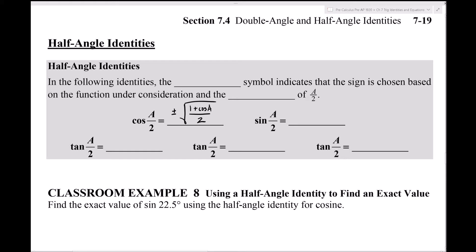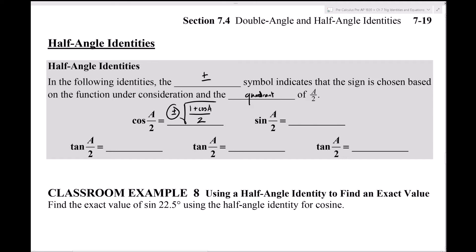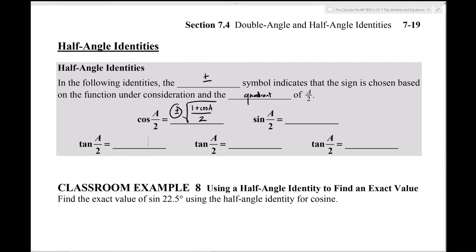The plus or minus symbol indicates that the sign is chosen based on the function under consideration and the quadrant of the angle a/2 - not the quadrant of the inner angle, but the quadrant of the angle you want. So that's the first formula: cos(a/2) = ±√((1 + cos(a))/2).